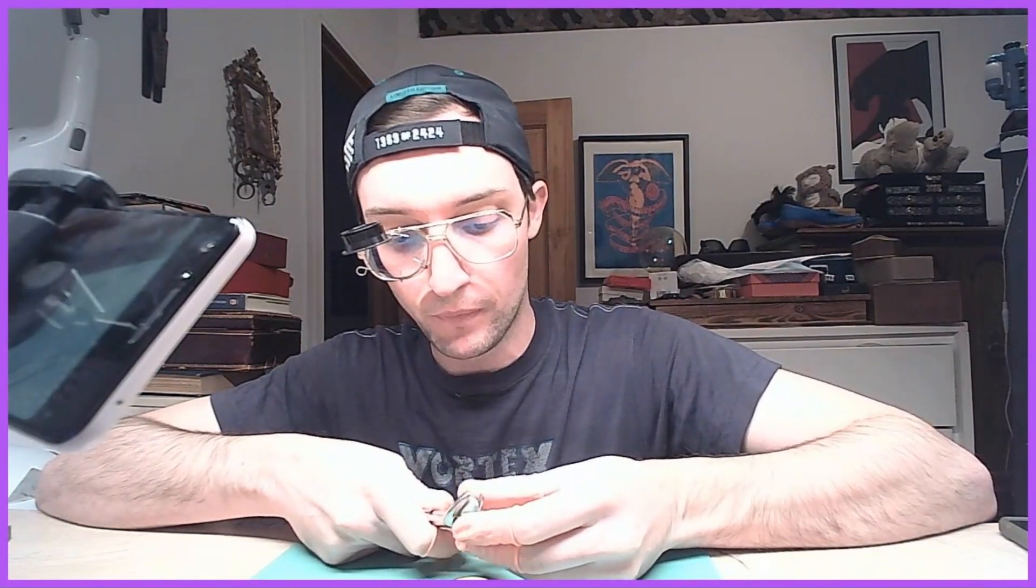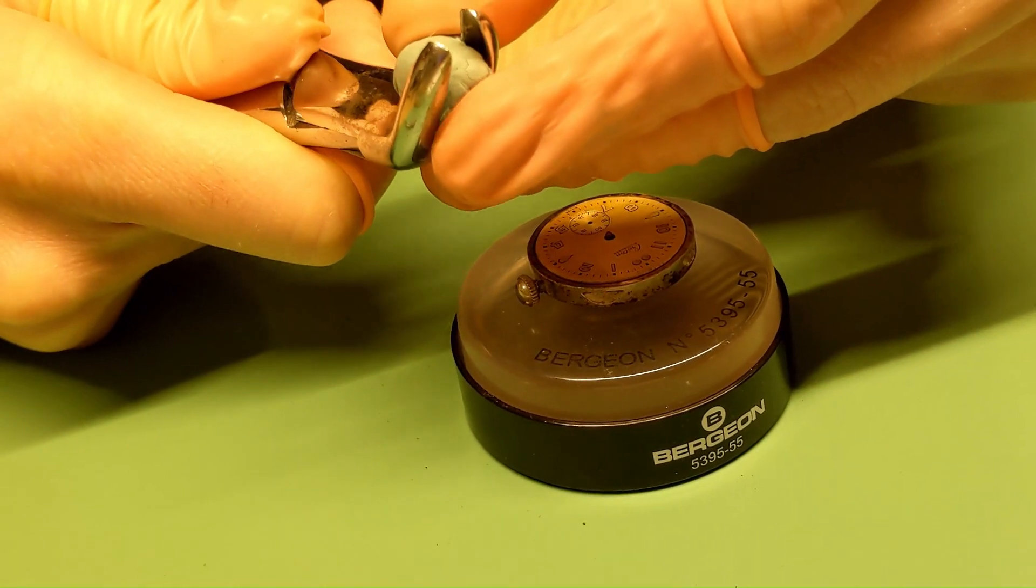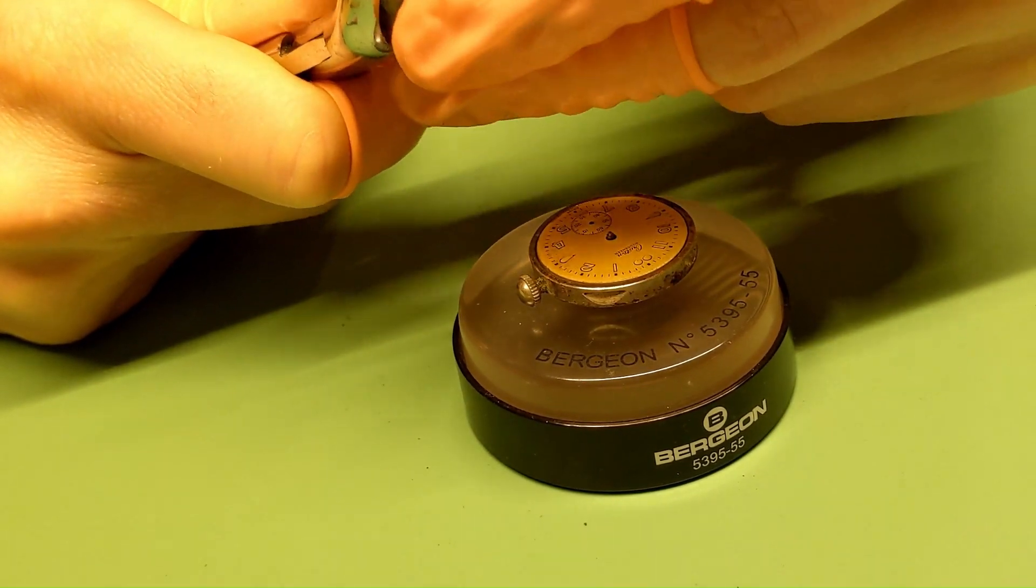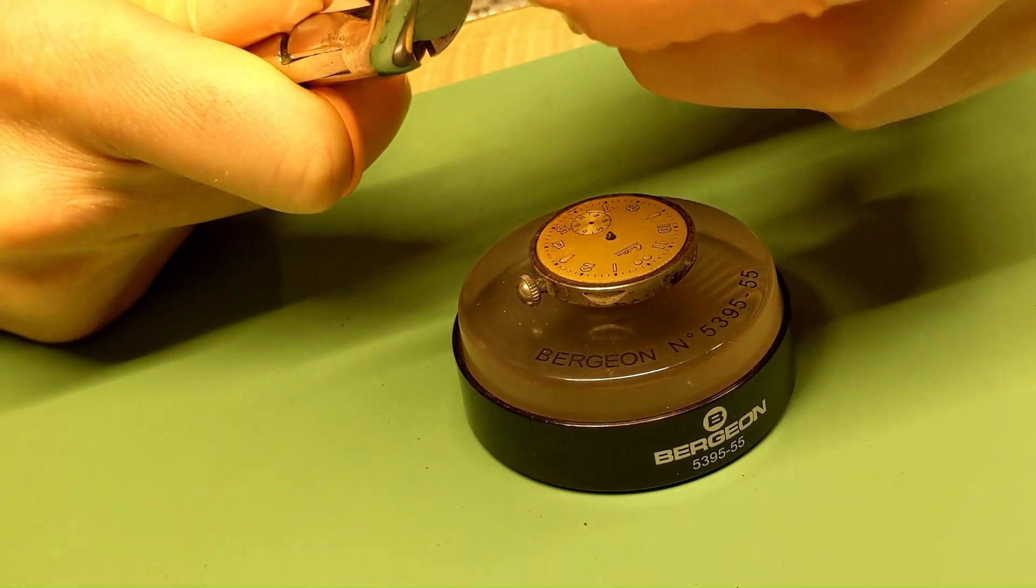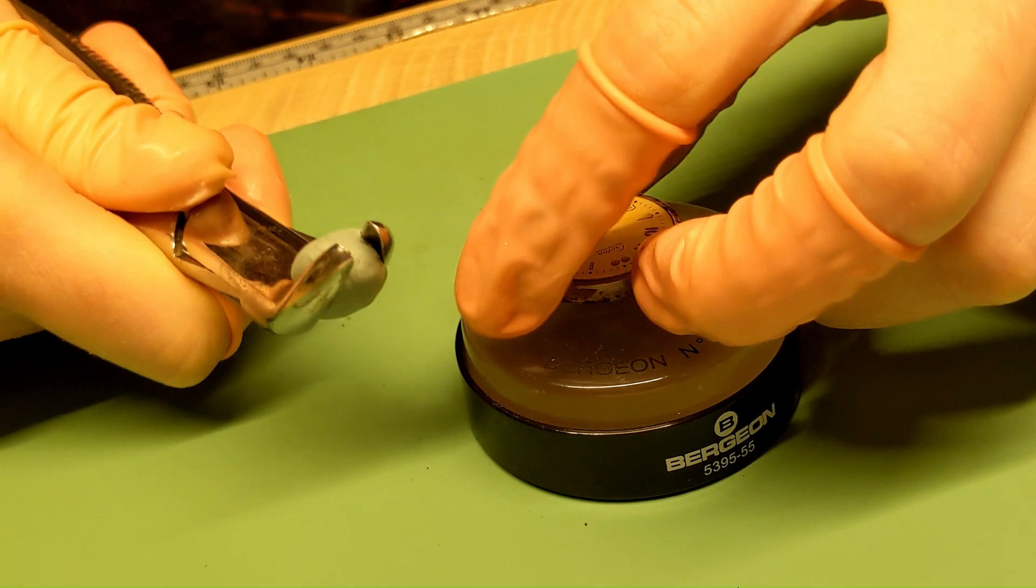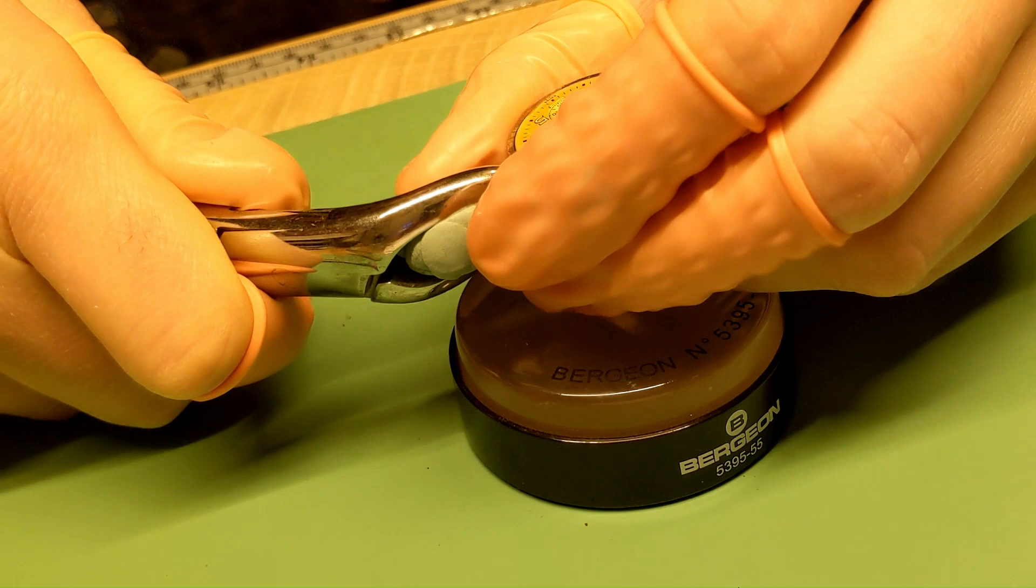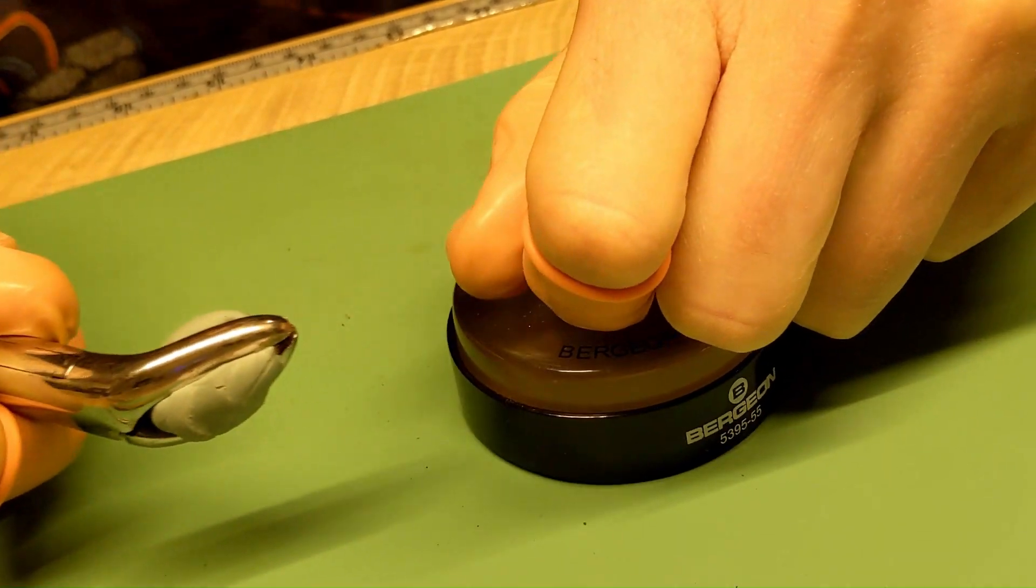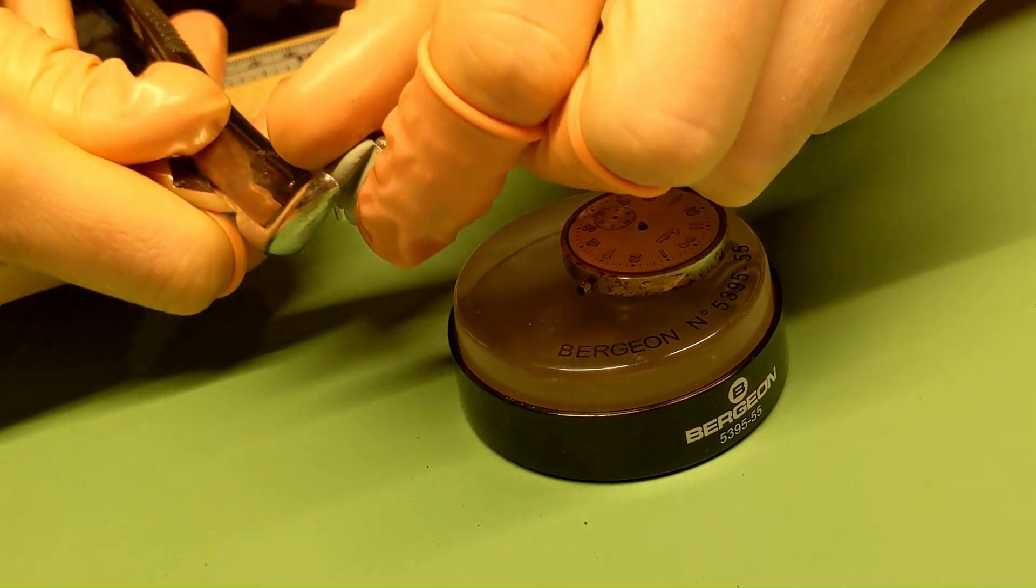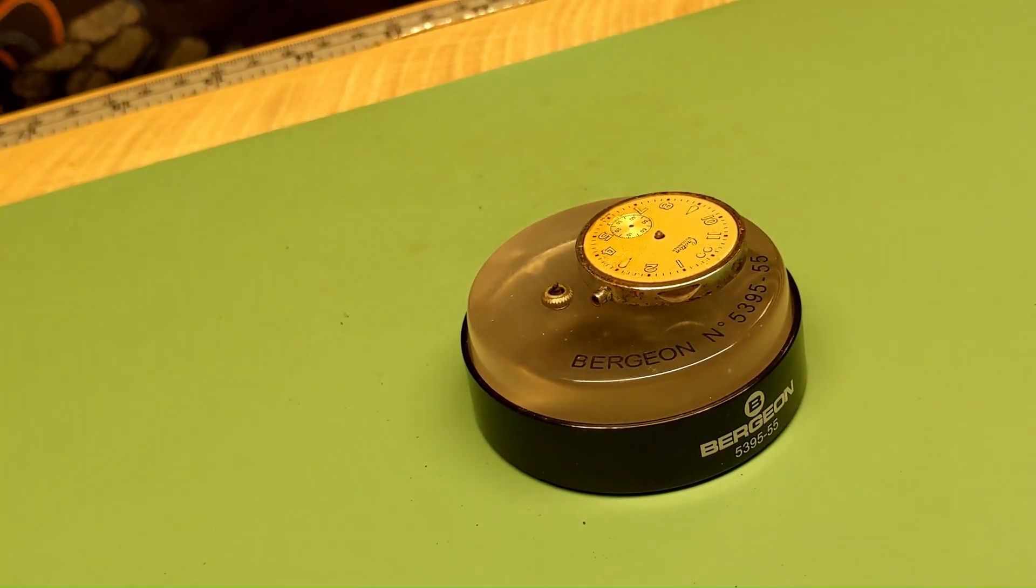What you can actually do to help prevent that crown from flying away is you can use some old rodico. Junky rodico is really useful. Use some old rodico in there. It's basically going to create a sort of pad against the crown here, so that when you get underneath there, it'll prevent it from flying off.